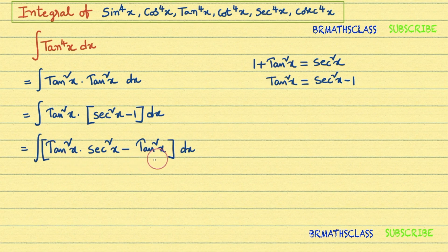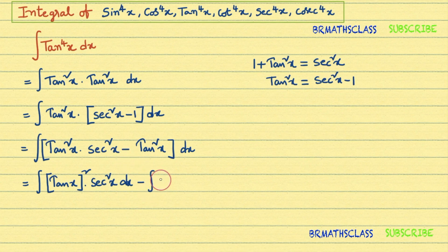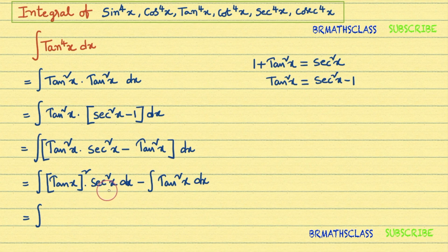We integrate each and every term separately: integral of tan²x · sec²x dx minus integral of tan²x dx. We can write tan²x as (tan x)², so the first integral is integral of (tan x)² · sec²x dx.